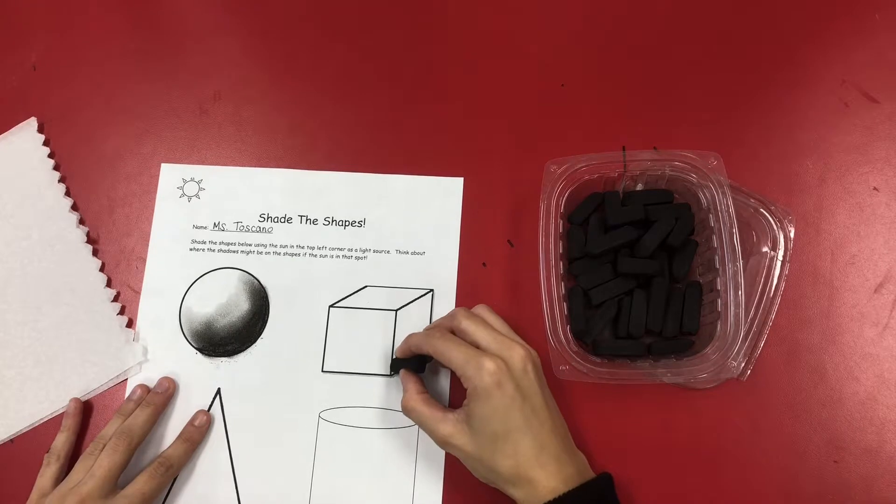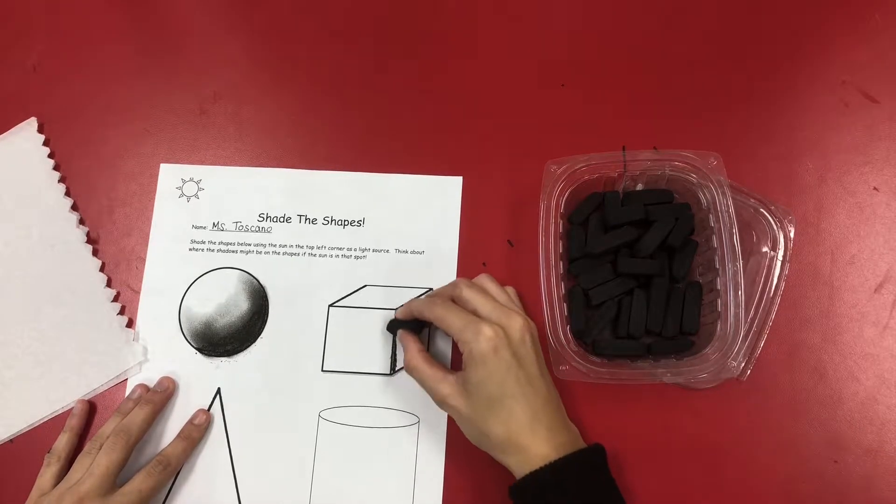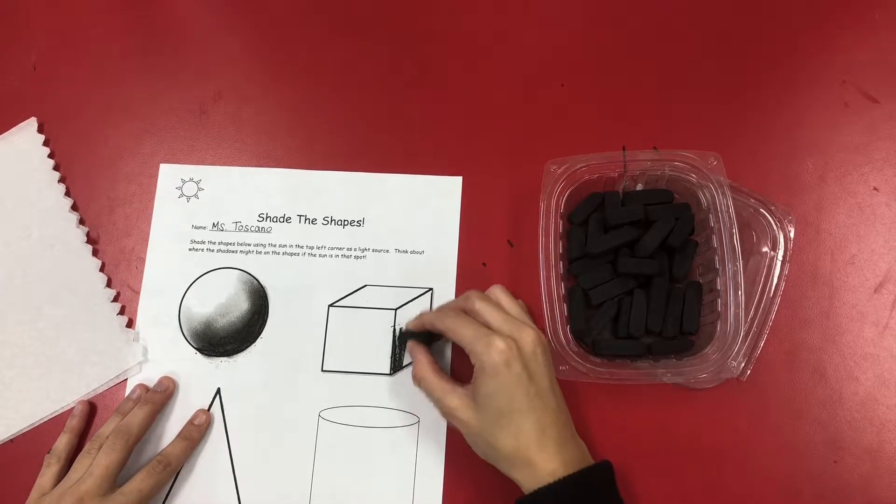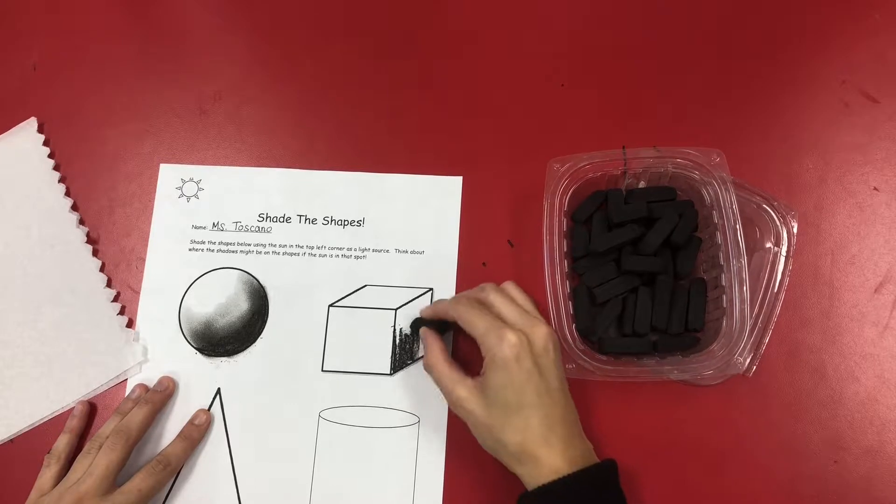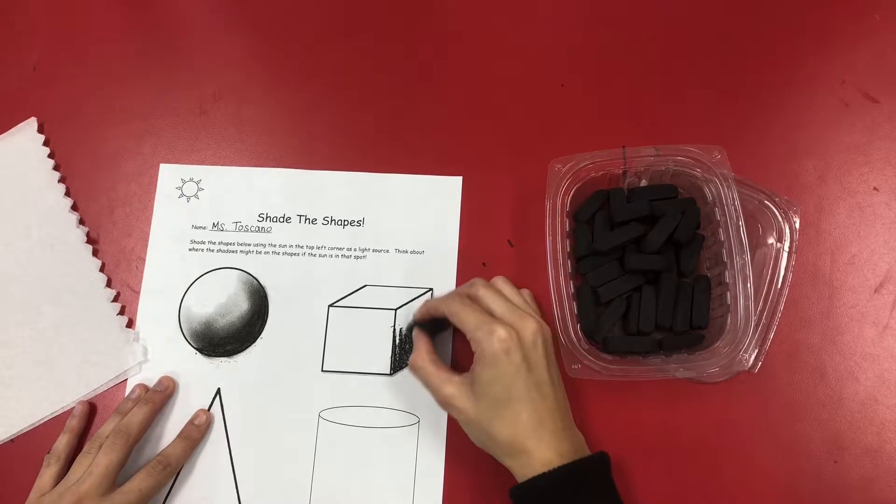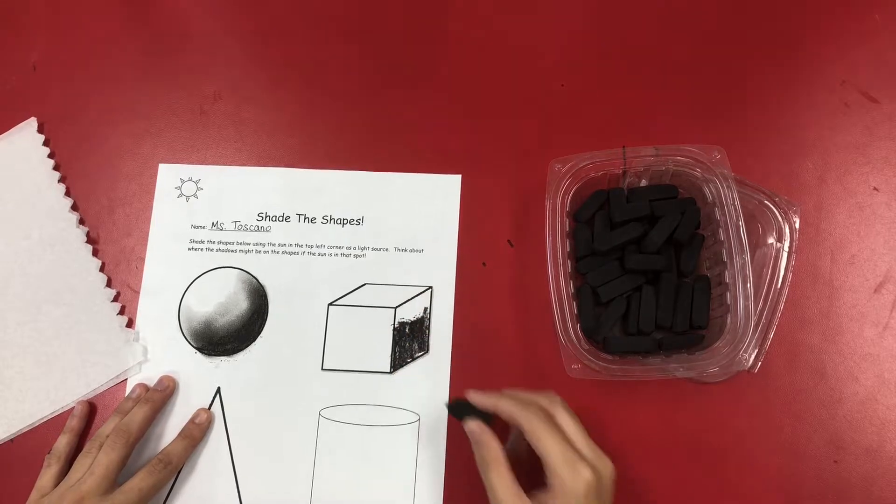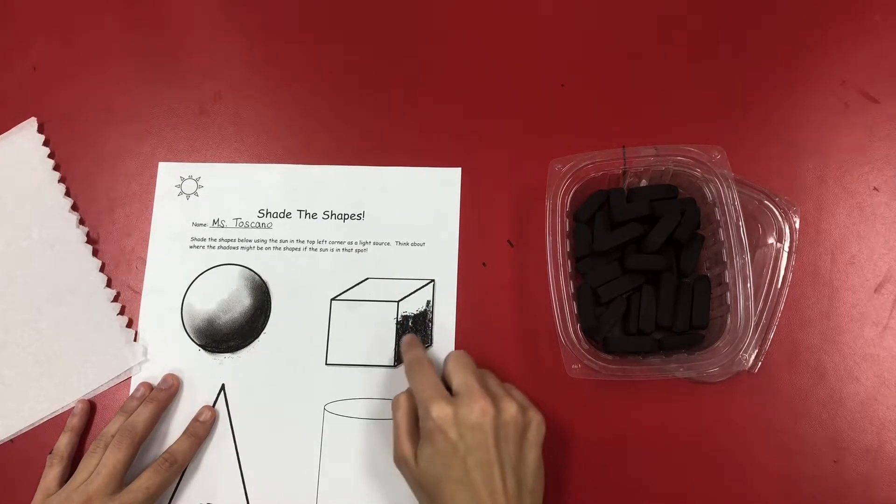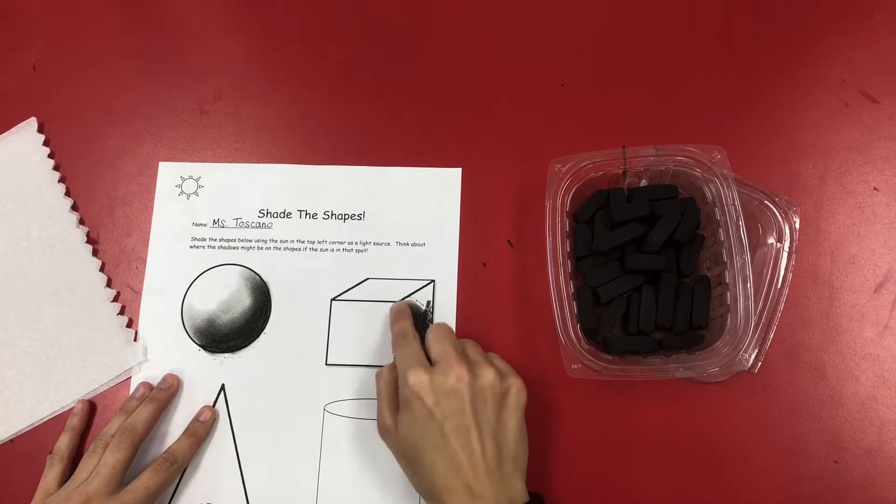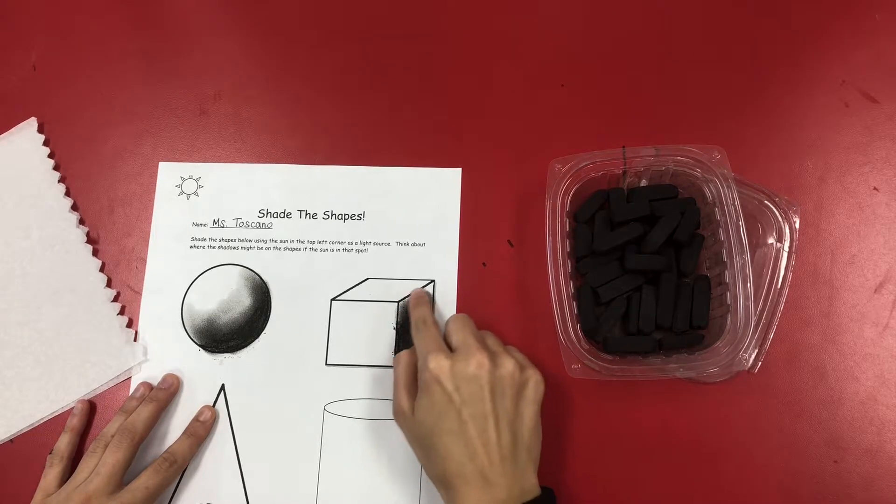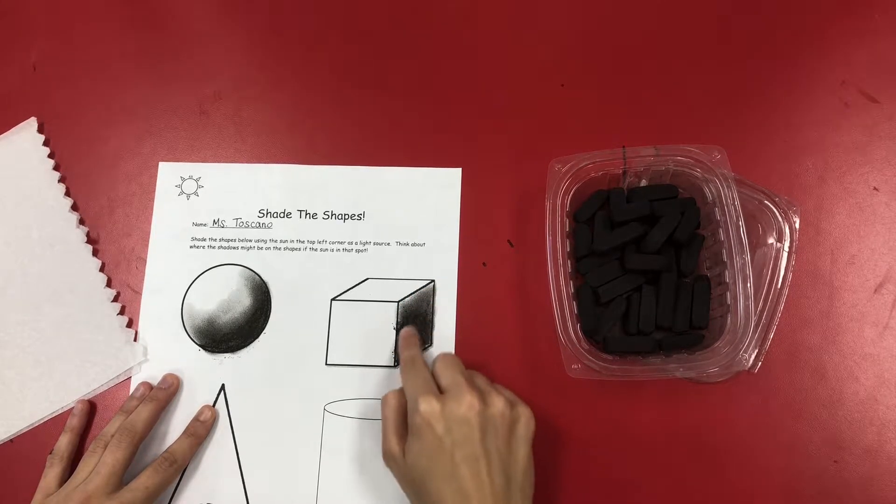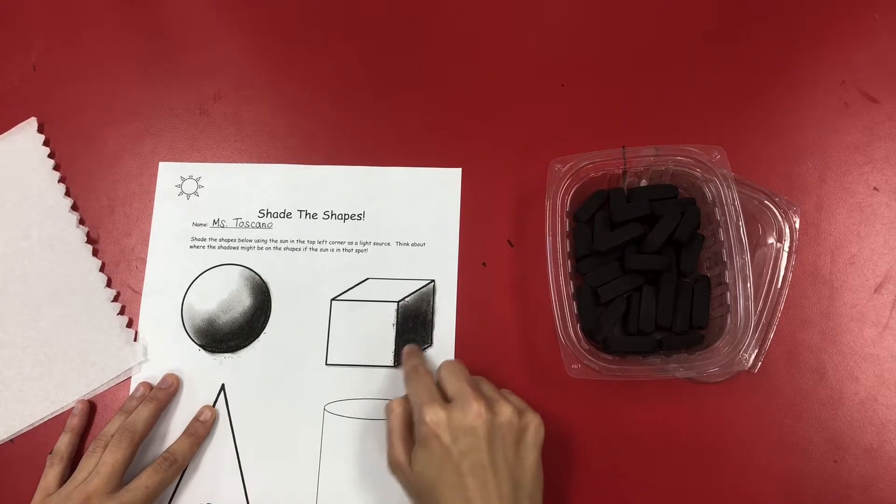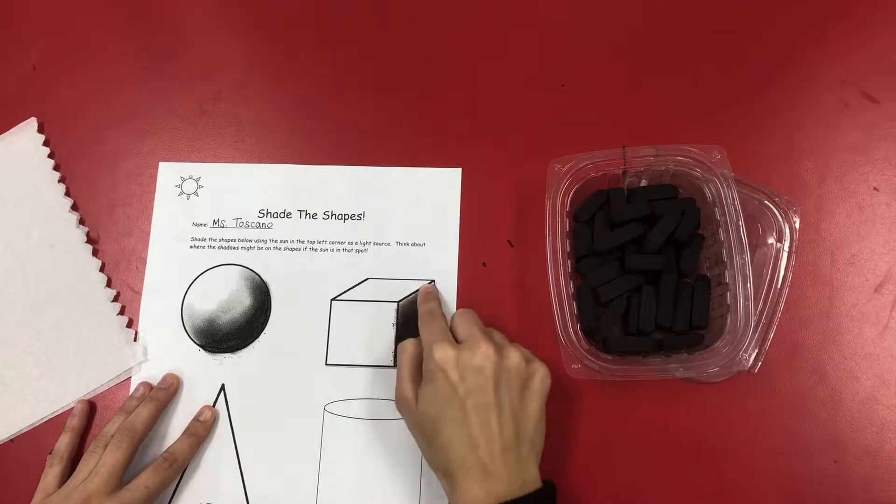I'm going to take my charcoal, and once again, just like we did with the circle or the sphere, I'm drawing and coloring in the shape of that shape. I'm going to take my finger and blend that up. You don't need to actually color in all the area with the charcoal because your blending will fill it in for you.